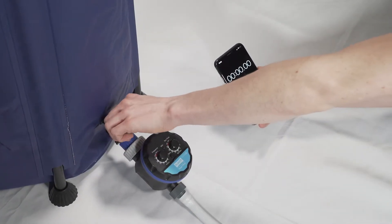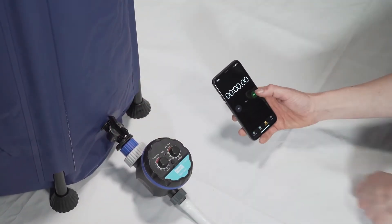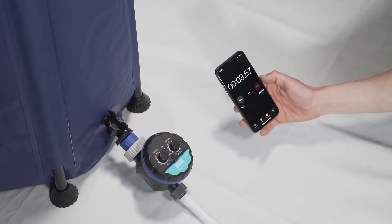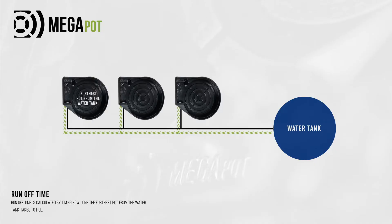Set the water running and measure how much time it takes to fill the pot furthest away from the water tank. The time it takes to fill the furthest pot is the runoff time for your setup.